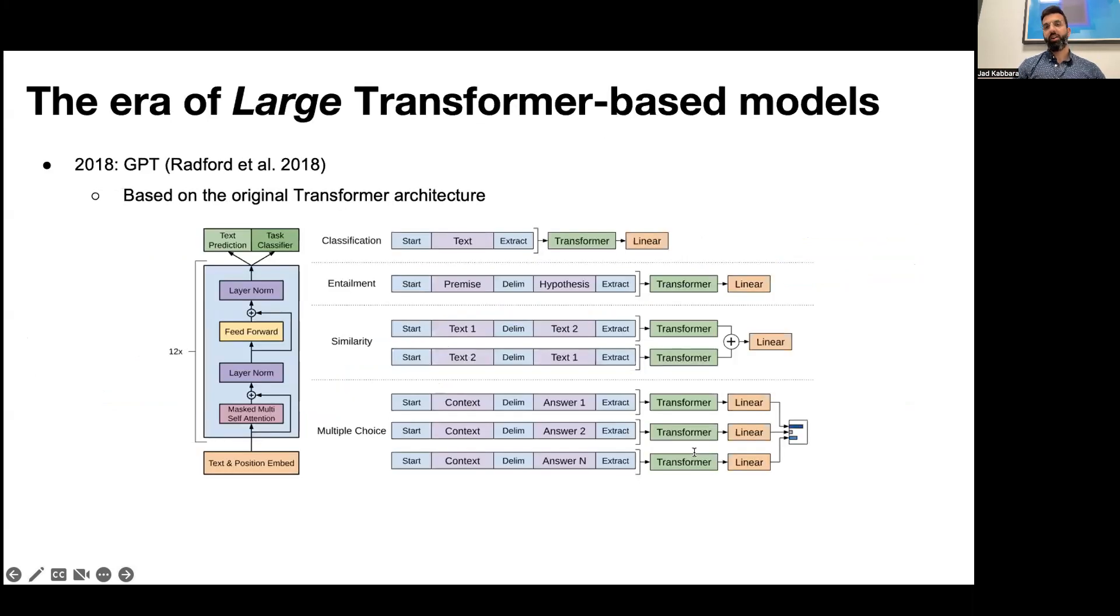Concurrently, there was another line of models being developed at OpenAI, starting with GPT in 2018. GPT is similar to BERT in that it's largely based on the transformer architecture.